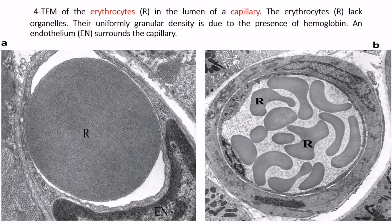Here is a transmission electron microscope image of the erythrocyte in the lumen of a capillary. The erythrocyte lacks organelles, and its uniform granular density is due to the presence of hemoglobin. The endothelium surrounding the capillary is also visible.